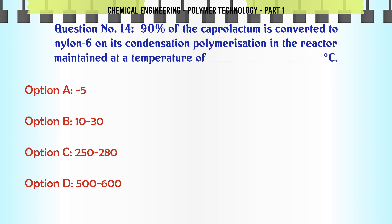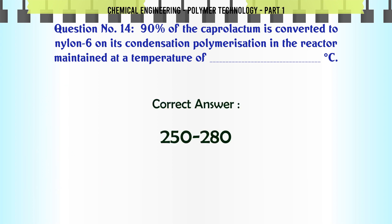90% of the caprolactam is converted to Nylon 6 on its condensation polymerization in the reactor maintained at a temperature of: A. 5°C, B. 10–30°C, C. 250–280°C, D. 500–600°C. The correct answer is 250–280°C.